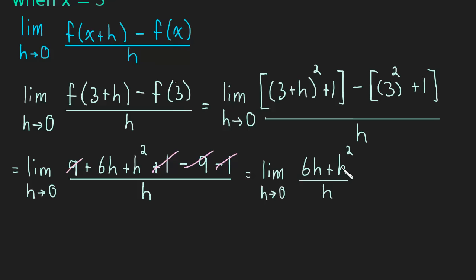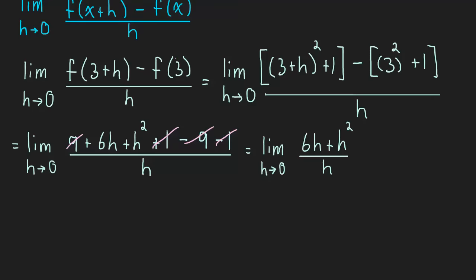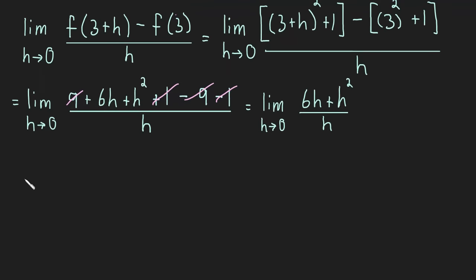And now we can factor an h out of the numerator. So this is the limit as h approaches 0 of 6 plus h times h. So I just factored out an h divided by h and now I can cancel these h's.